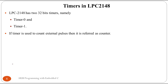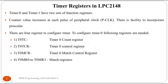The LPC2148 has two 32-bit timers: Timer 0 and Timer 1. If a timer is used to count external pulses, it is referred to as a counter. To control these timers, there are specific registers. The timer counter value increases at each pulse of the peripheral clock, and there is also a prescaler register available.